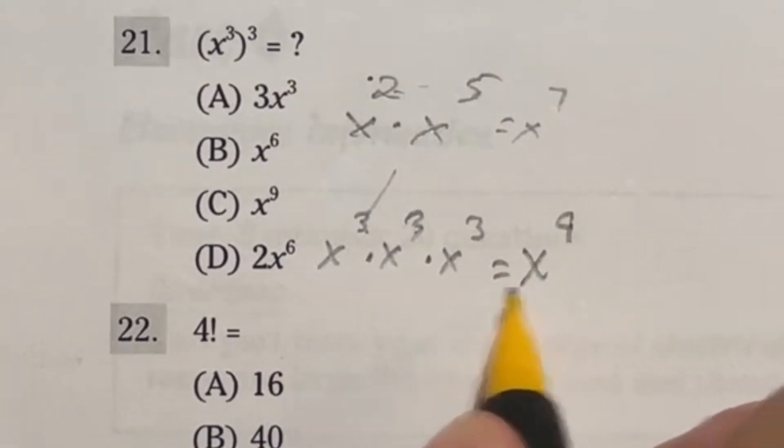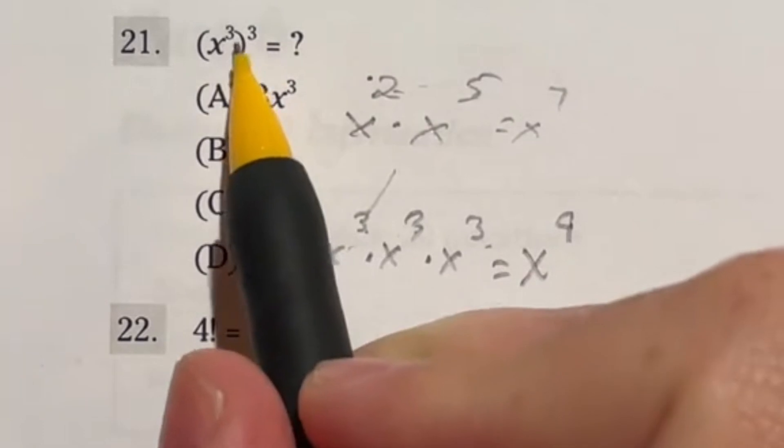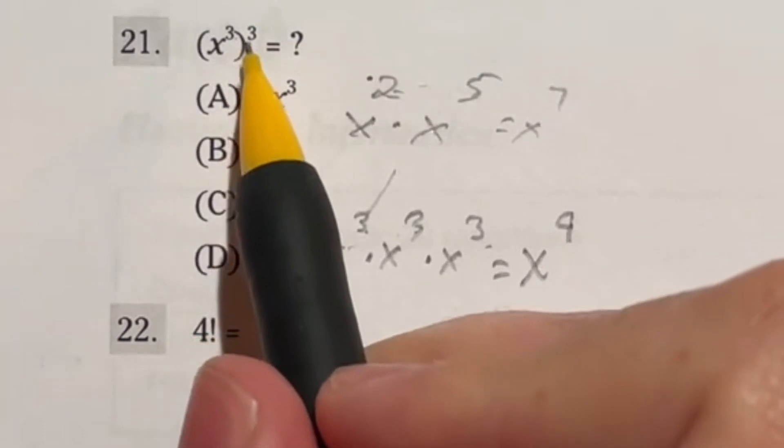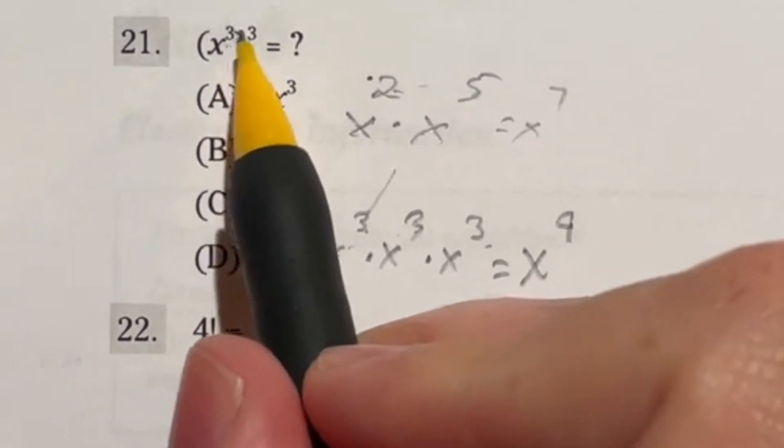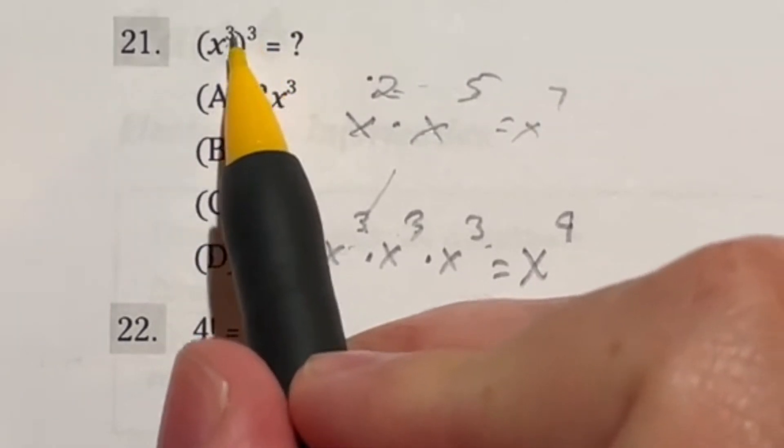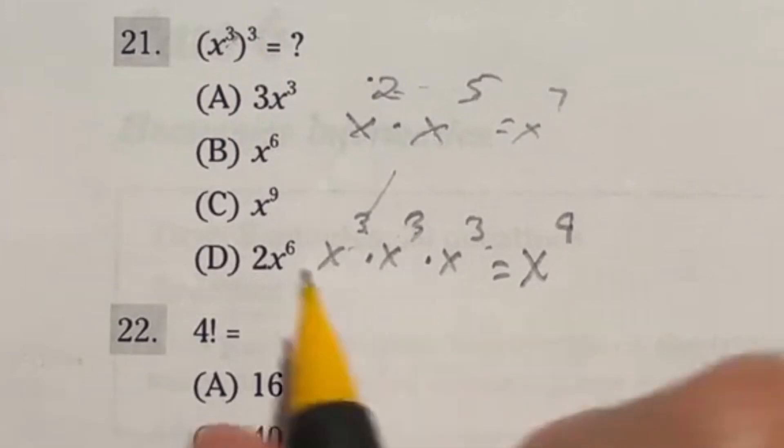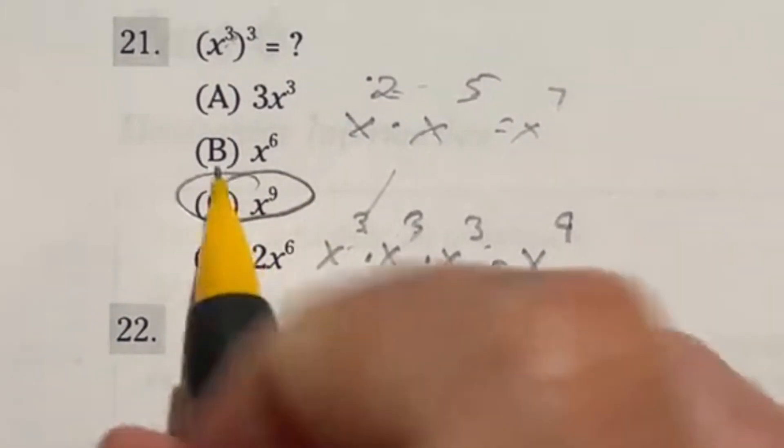Now the quick way of doing that is saying, well, if we have that three times, essentially, you're just multiplying it. So anytime you have a power raised to a power, you can just multiply the exponents together. Three times three is nine gives us this same answer. That means our final answer here is c.